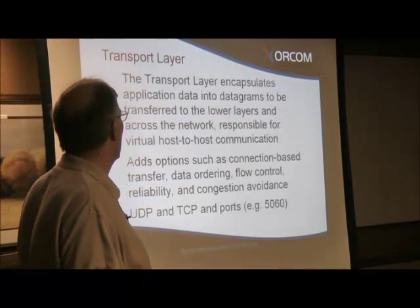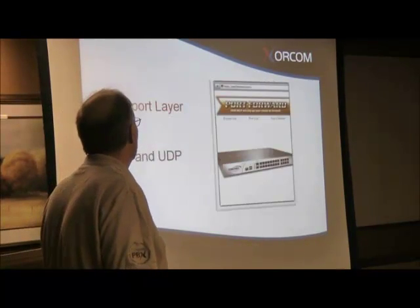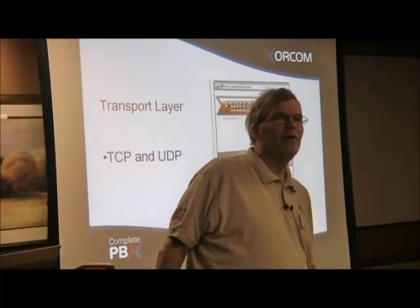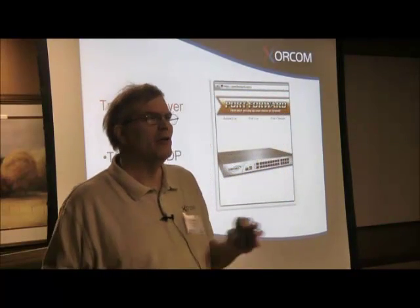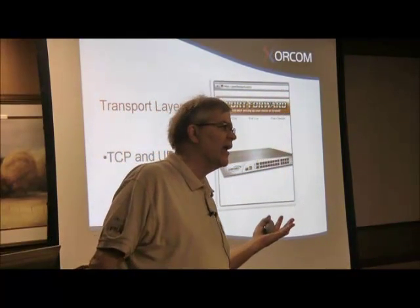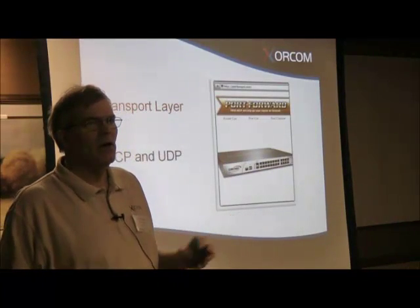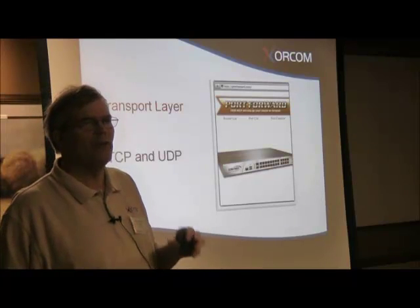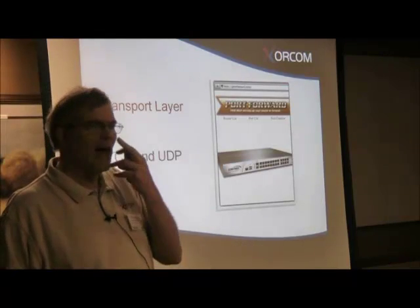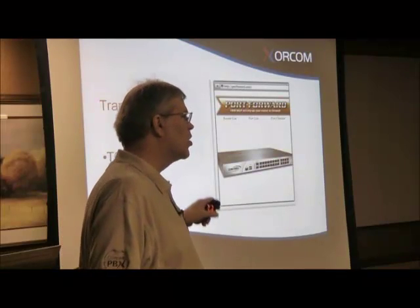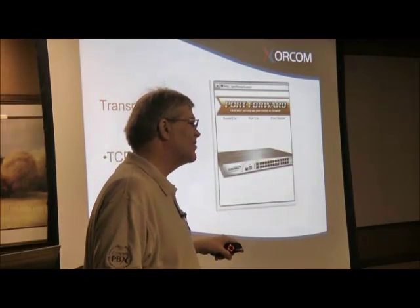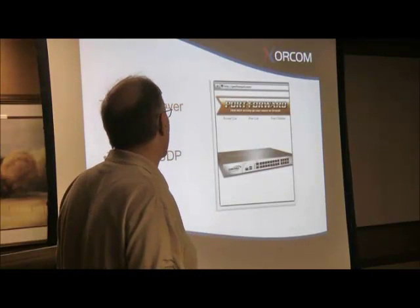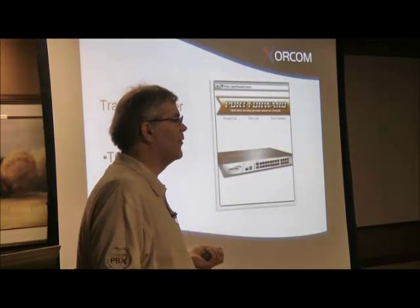Let's talk a little bit about the transport level. The transport level is how we ship packets across the network. There's two basic types of transport we worry about: TCP and UDP. TCP is guaranteed that if you lose one, it's going to retransmit. Phone systems don't use that. Phone systems use UDP for almost everything except for our web interfaces. All of our SIP controlled, IAX controlled, and our media streams — be it video or audio — all run in UDP. So if the packet doesn't get through, it just gets lost.